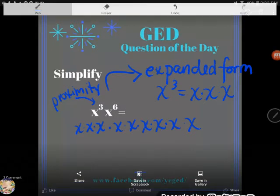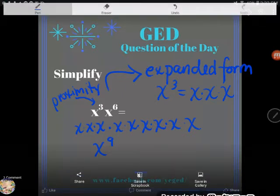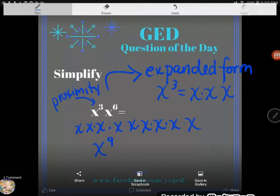And from just writing it down in expanded form, we can see we actually have one, two, three, four, five, six, seven, eight, nine x's multiplying. And so absolutely the correct answer to this would be x to the ninth power. That's as much as we can simplify. We can't do anything else because we don't know what x is.